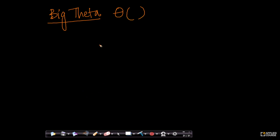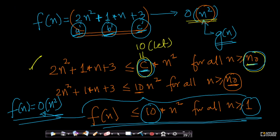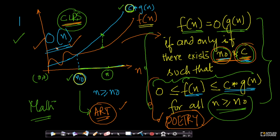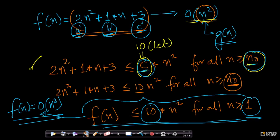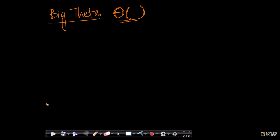Since we have seen what Big O is, the next important notation is called Big Theta. This is written as theta of something. The definition is going to be very similar. If you have understood Big O, Big Theta should be straightforward. I will draw a diagram and give you some mathematical explanation. It is going to be very straightforward.